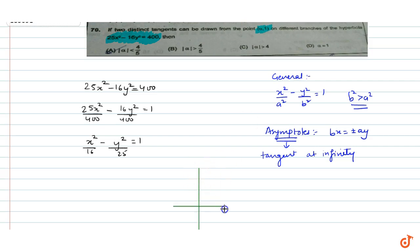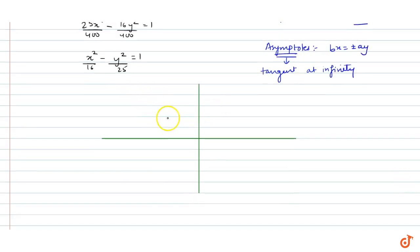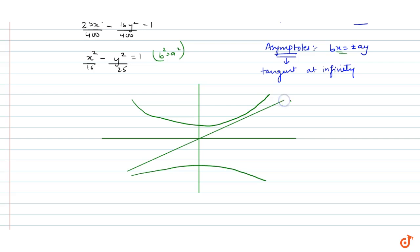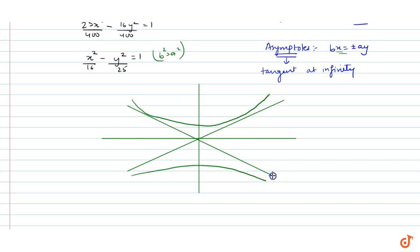If we plot the graph on a coordinate system, the hyperbola will look like this because b² is greater than a². The lines going to infinity — which are our tangents — always pass through the origin. These two asymptotes are tangent to both branches of the hyperbola at infinity.